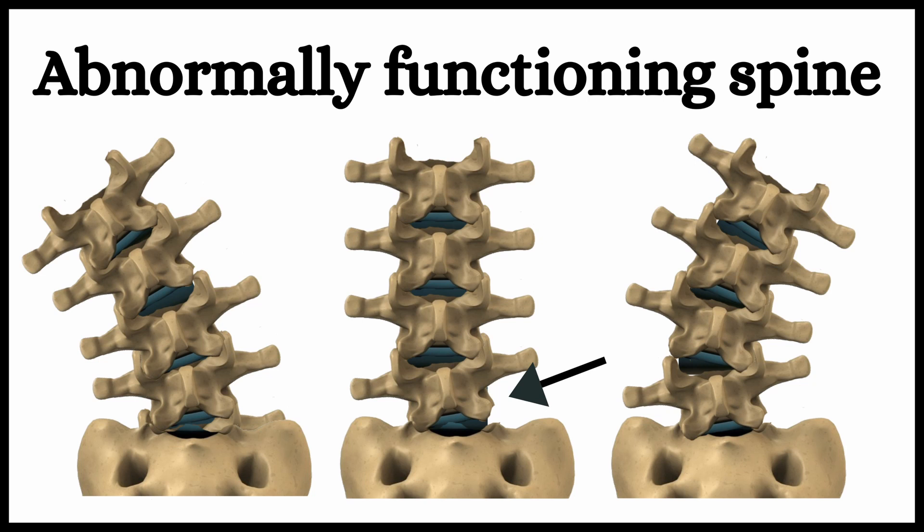In this example, the bottom vertebra should be able to move freely from side to side but it's stiffened up and tilted slightly to the left. When the spine bends to the left everything looks okay because the problem vertebra is bent that way. When standing straight, the bottom vertebra is still slightly tilted left and the one above has to tilt back to try to straighten and balance the spine. The biggest problem is when the spine tries to bend in the opposite direction — the bottom joint is still stiff and tilted left, so the joints above are forced to bend way more to compensate.